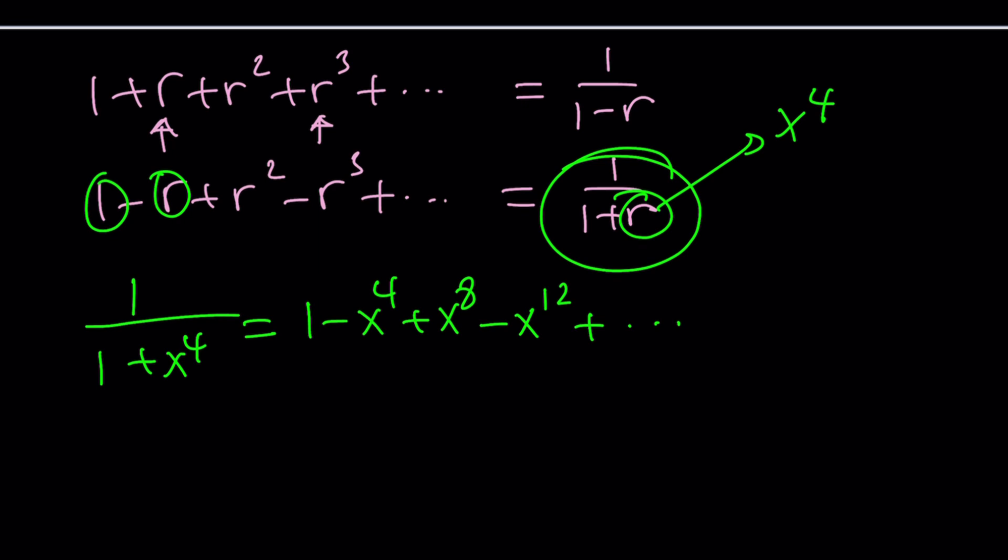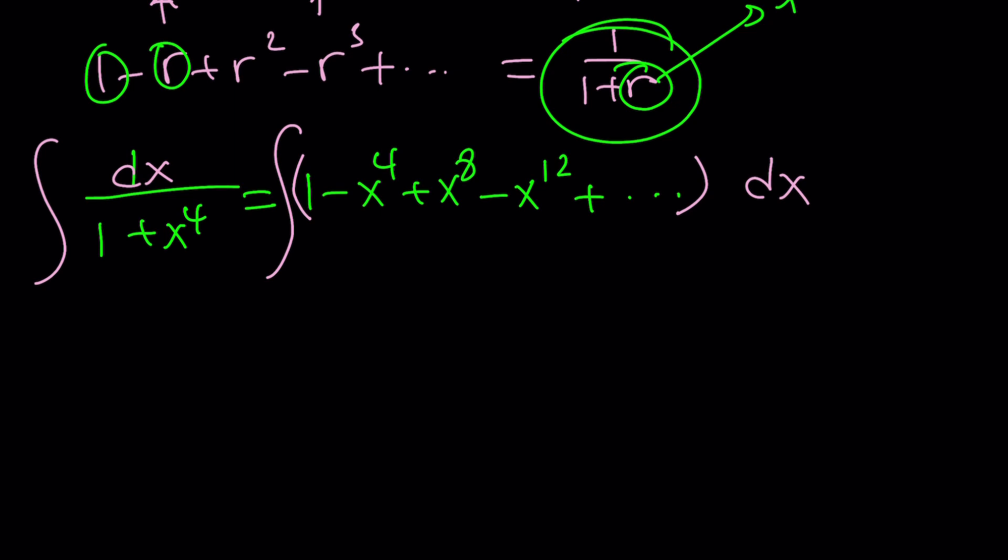Now, what do you do with this? Integrate both sides. Exactly. Let's do it. So I'm going to integrate this and integrate this, and I need to put this whole thing in parentheses. How do you integrate the left-hand side? We'll get to that. But how do you integrate the right-hand side? Easy. It's just power rule. How do you integrate 1? x. This is x^5/5, plus x^9/9, minus x^13/13. You get the idea?